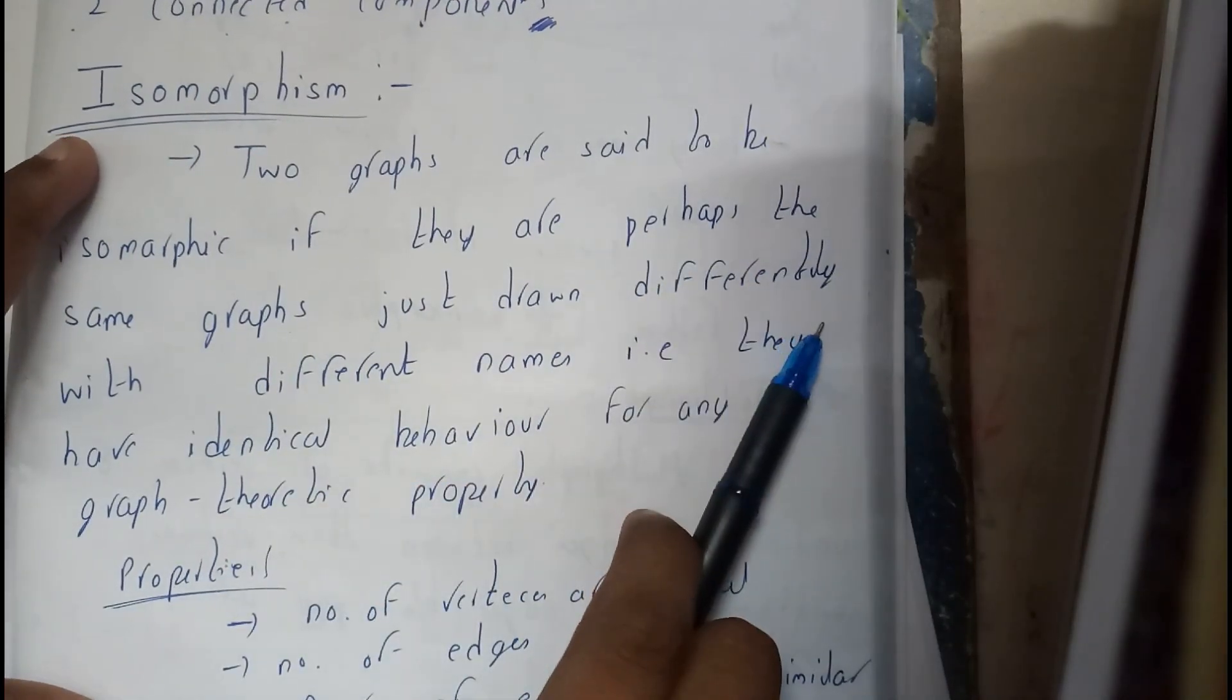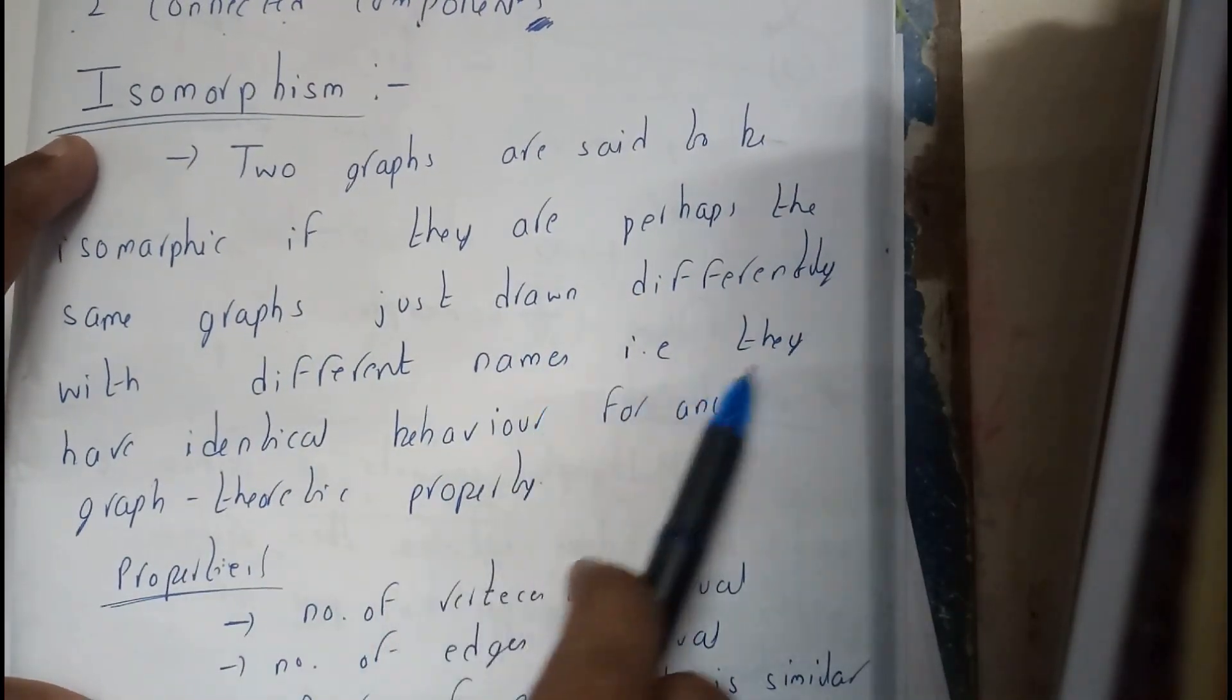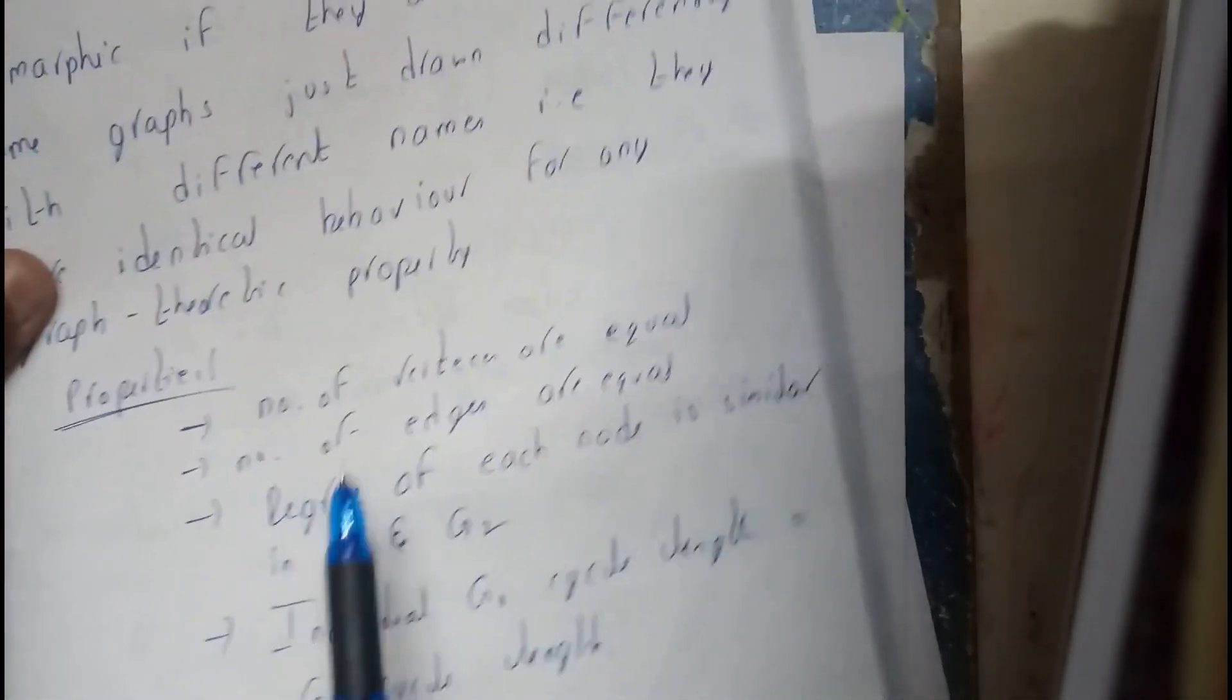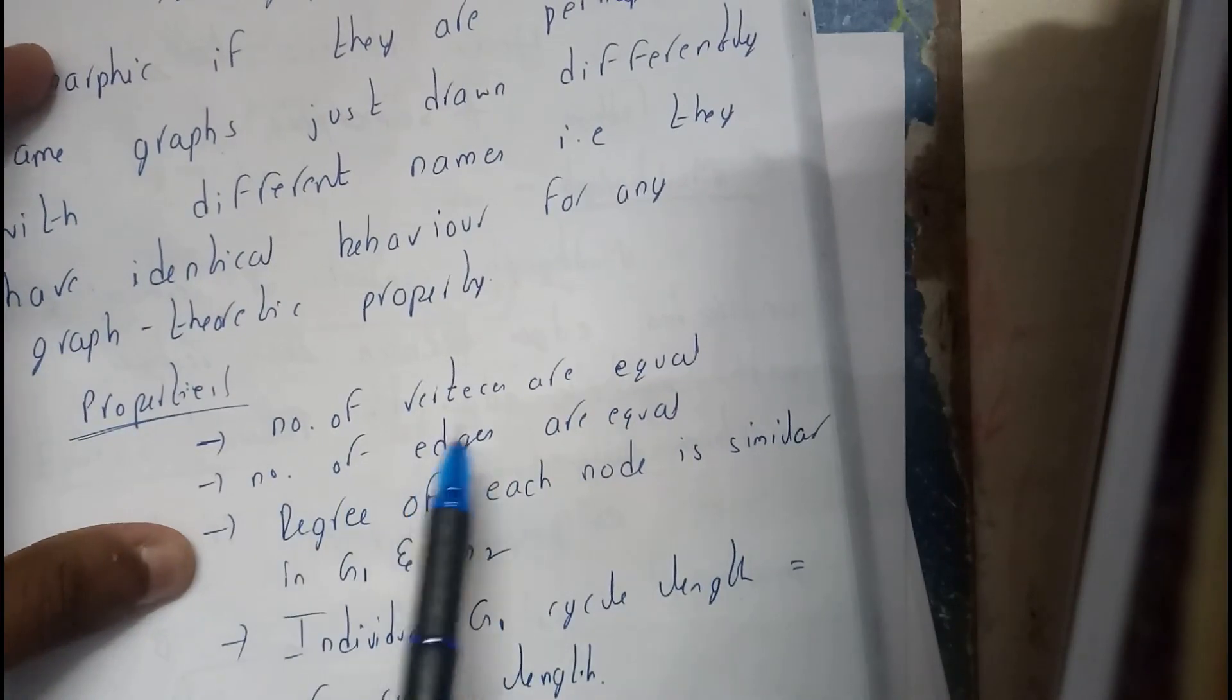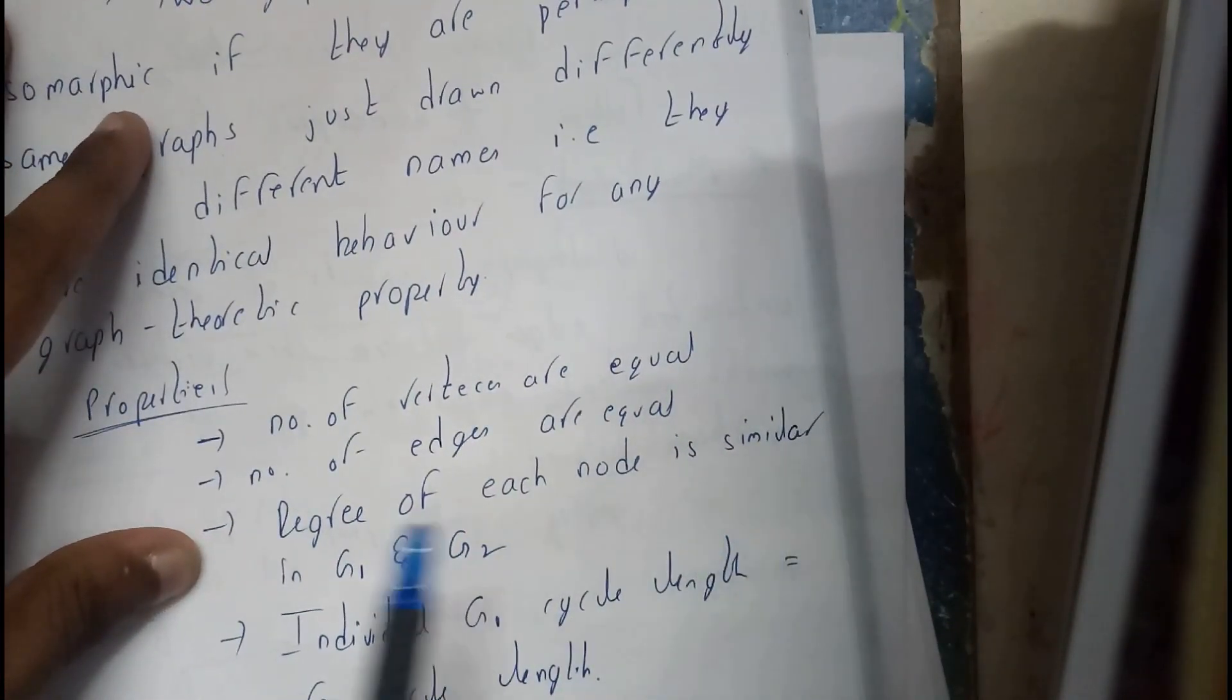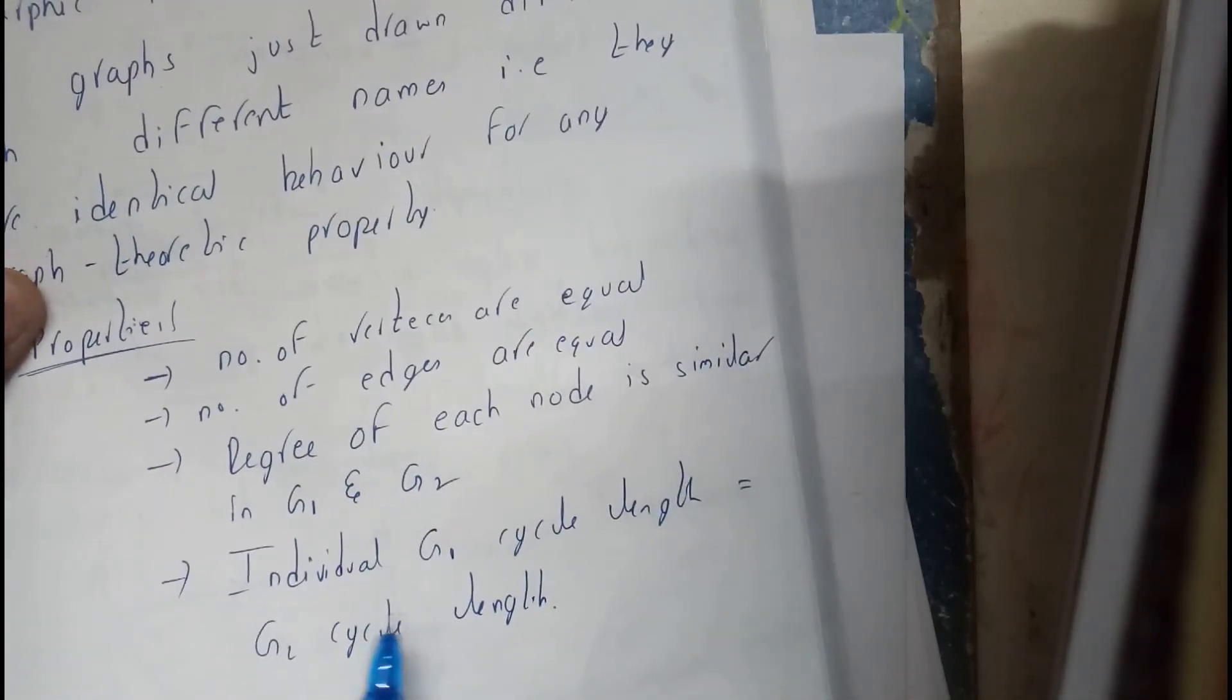That is, they have identical behavior if all the properties are followed. The number of vertices are equal, the number of edges are equal, degree of each node is similar in both the graphs, the cycle lengths of them are also similar.